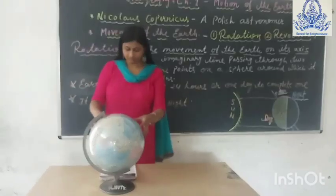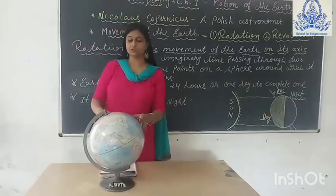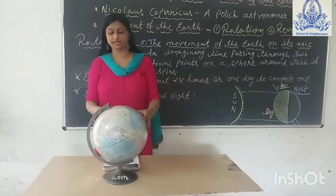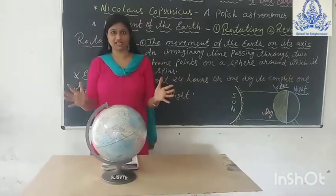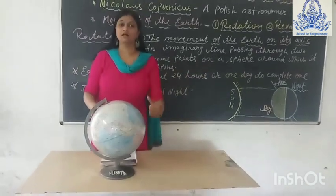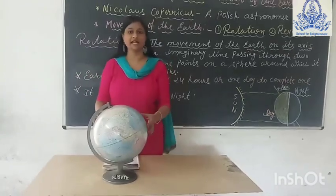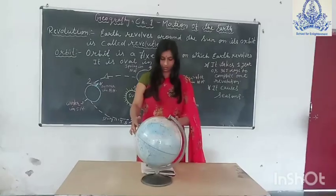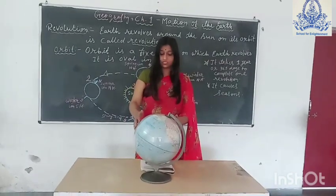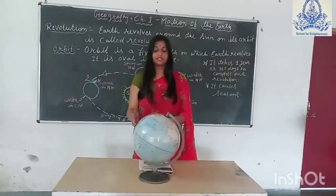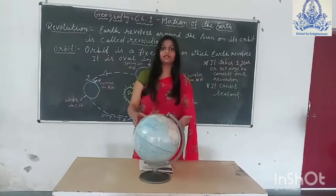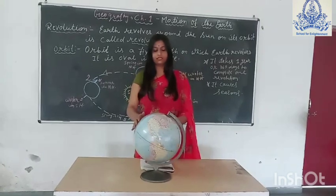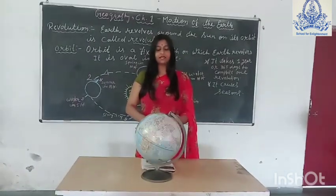Let us understand the formation of day and night with the help of this activity. You can take a globe and a torch, and you can do this activity with a friend. Take a dark room and shine the torchlight onto the globe. The part which is getting light — this is day. The part which is far away from the light — this is night. Now slowly rotate the globe. You can see the countries that were in darkness are now in the light, and the countries that were in the light are now in the dark. This is how the earth rotates.